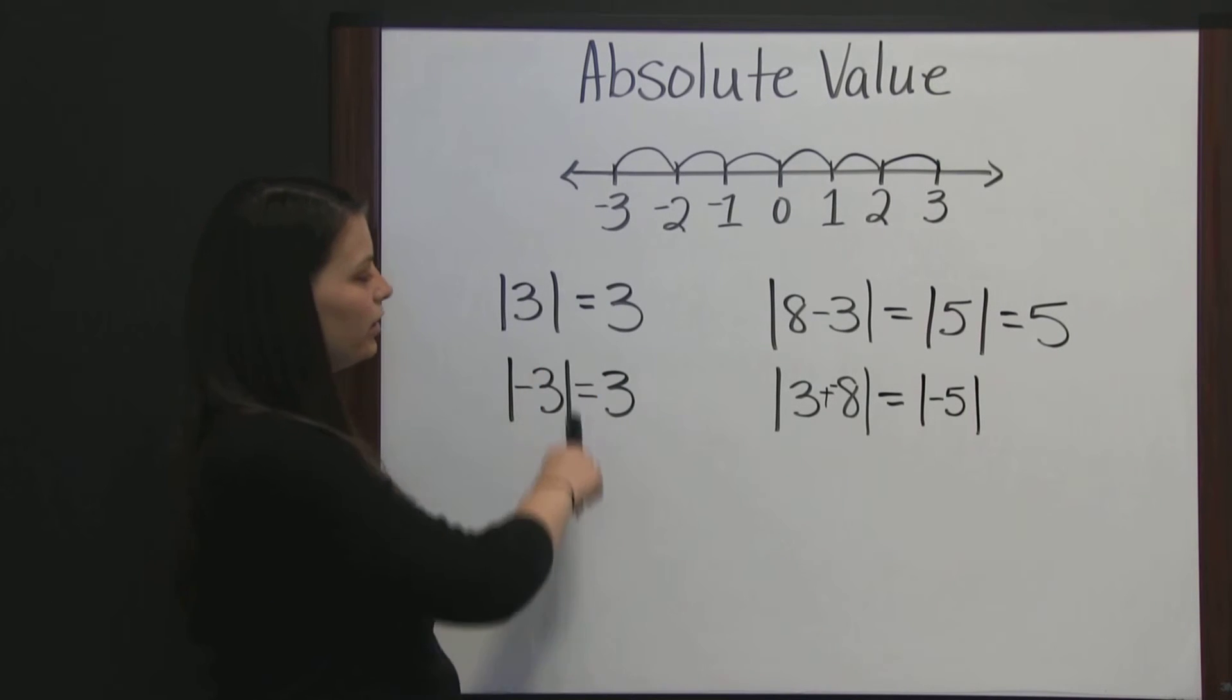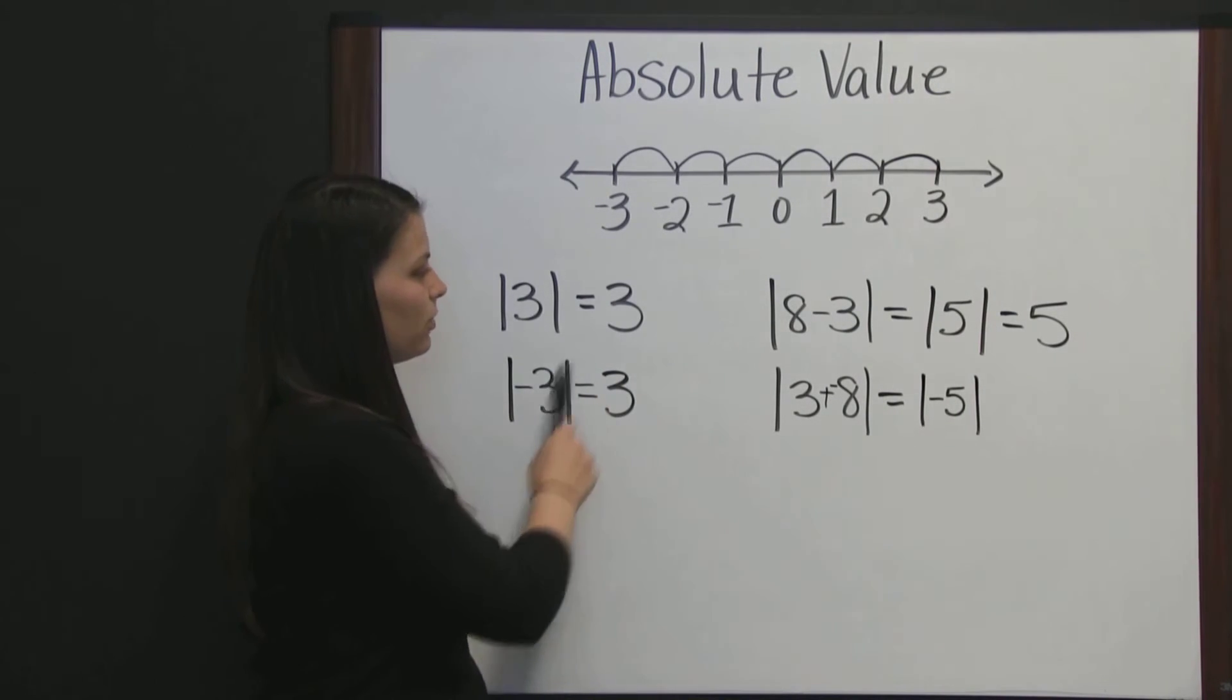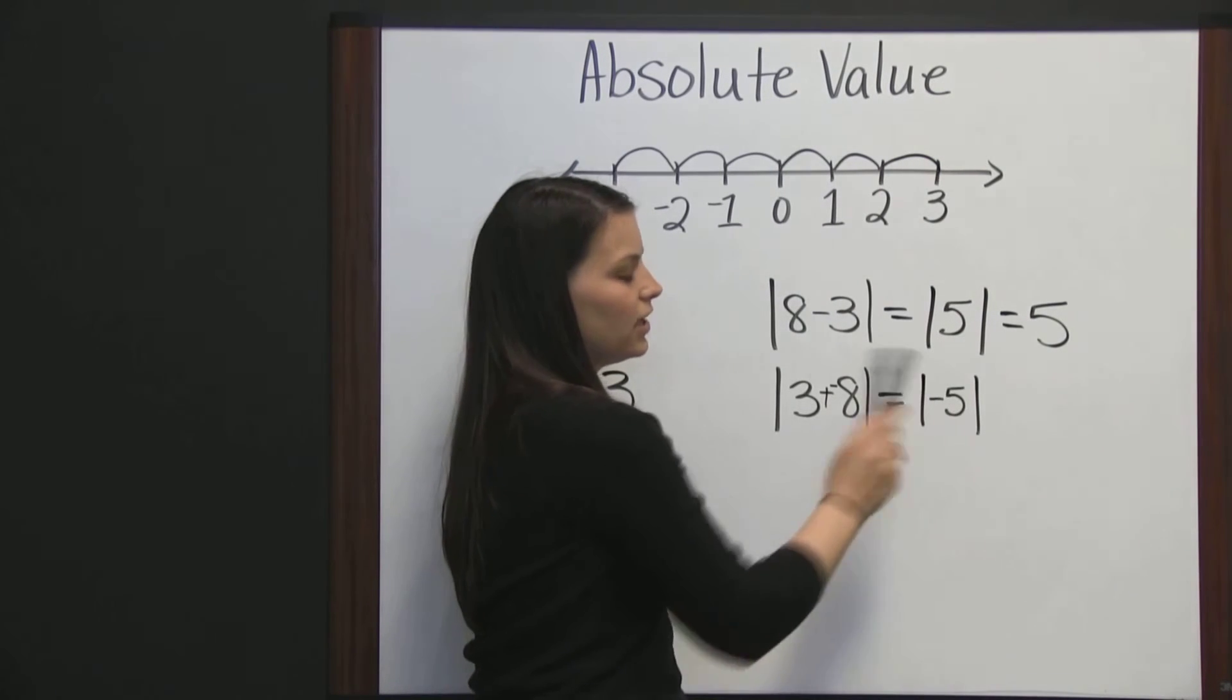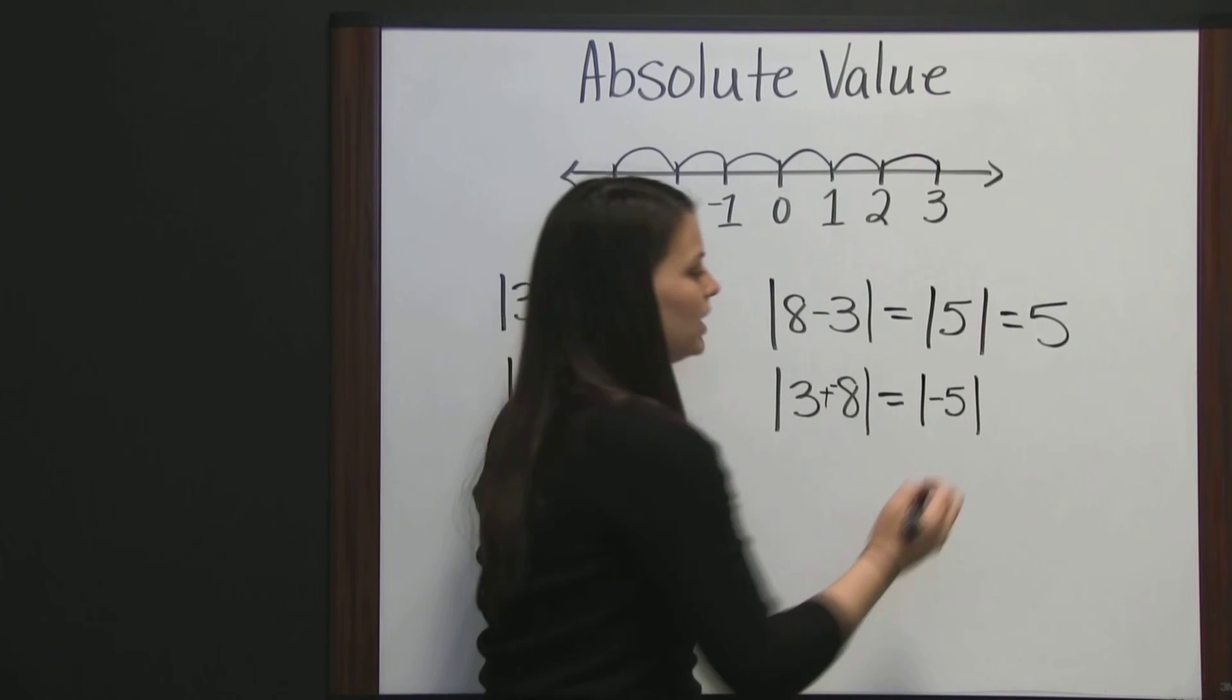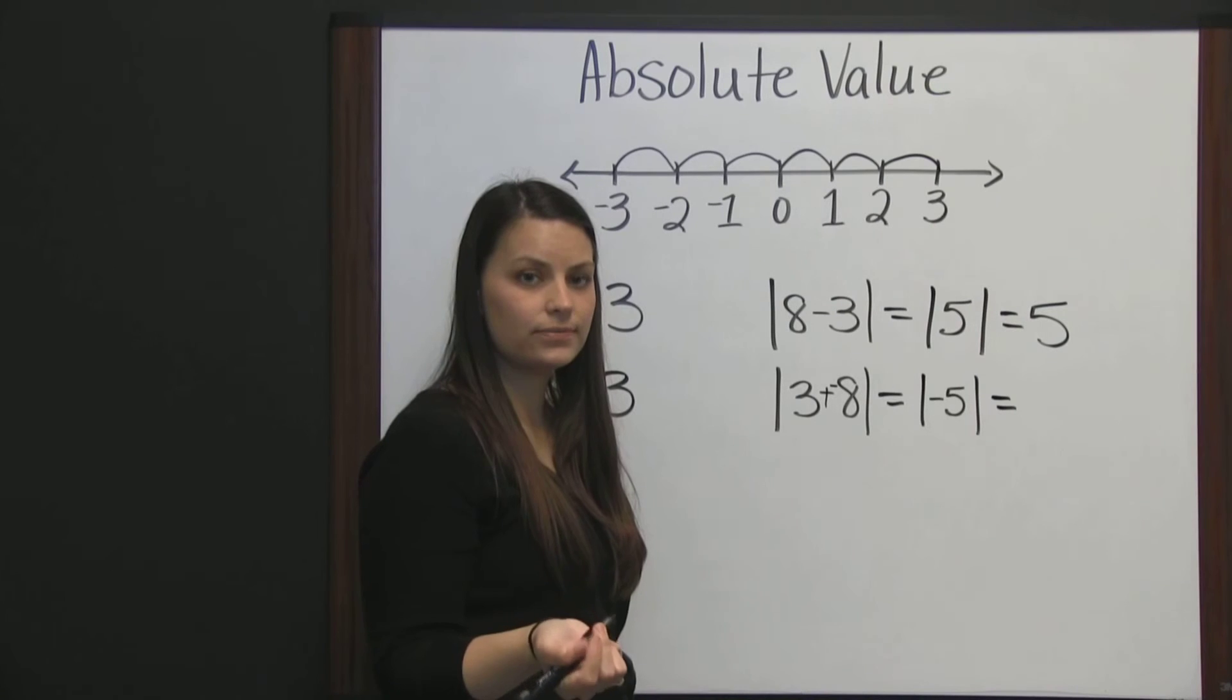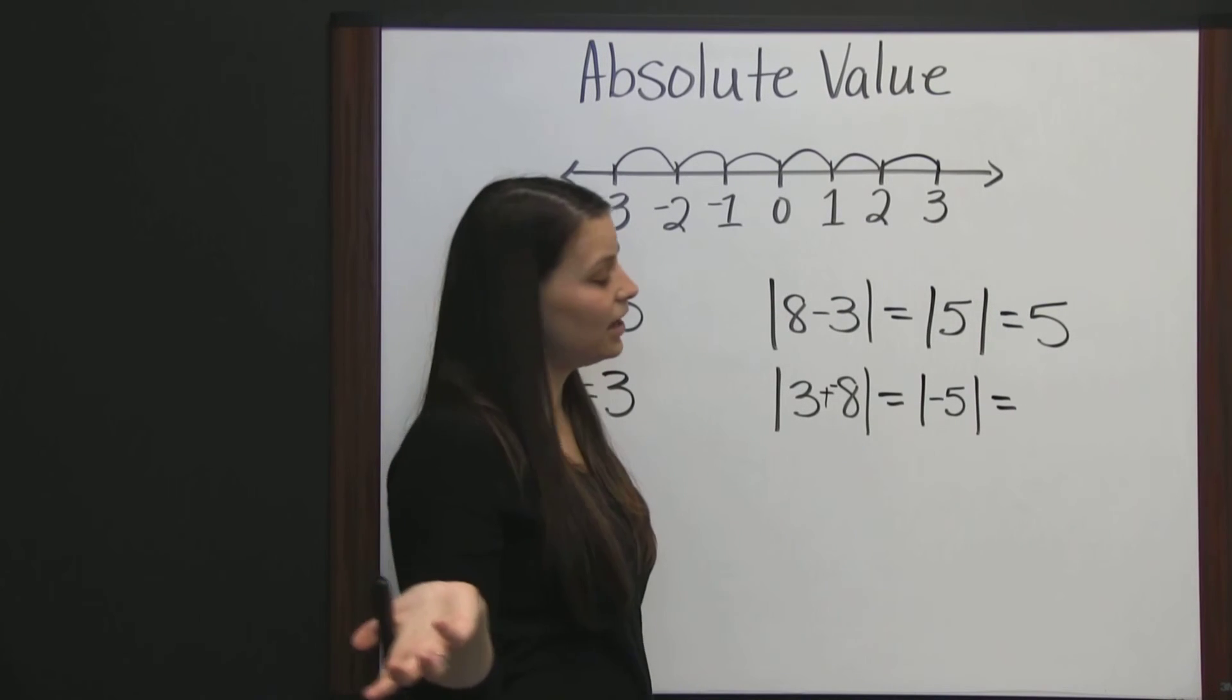And, like we talked about over here, the absolute value of a number and its negative counterpart are the same. So, the absolute value of five and negative five is the same, because again, absolute value is the distance from zero, and distance can never be negative.